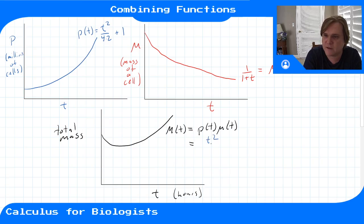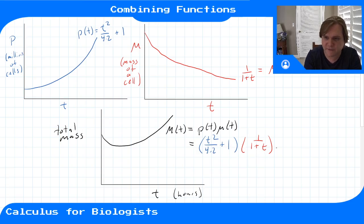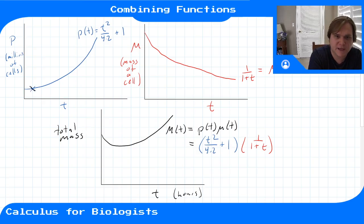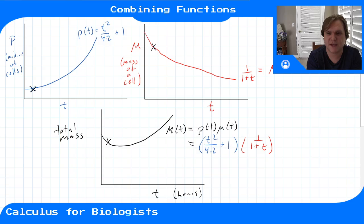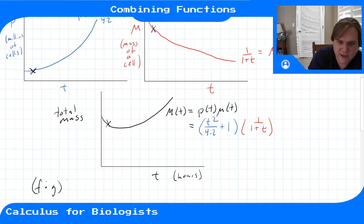The total mass would be the number of cells times the mass of each one: N = p(t) × μ(t). For this example, that's (t²/4.2 + 1) times 1/(1+t). You multiply these two functions together and that gives you an expression for total mass. At every point in time you take the value of one function and multiply it with the corresponding value of the other. So the rule is: (f × g)(x) = f(x) × g(x).